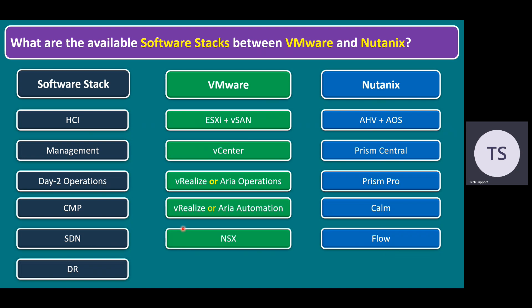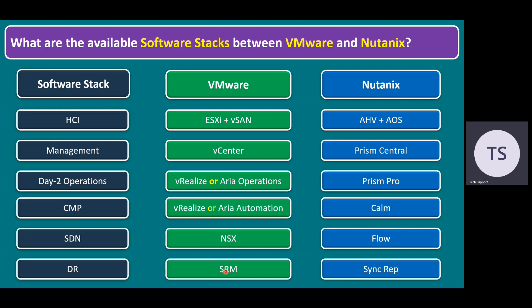Some customers are also looking for a disaster recovery solution. Normally organizations have at least two sites — site A and site B, or a primary site and a disaster recovery site. For these scenarios, organizations require a disaster recovery solution. From VMware, the solution is called SRM — Site Recovery Manager. Nutanix also has a disaster recovery solution called SyncRep (Sync Replication).